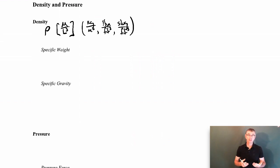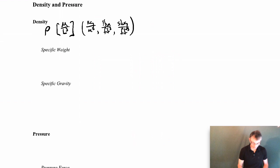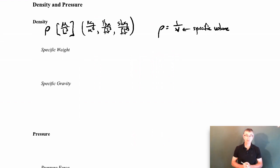You've probably seen density, or something related to it, in a thermodynamics course, where we often deal with specific volume. Specific volume and density are simply inverses of one another — density equals one over the specific volume. In thermodynamics we typically use specific volume, whereas in fluid mechanics we typically use density.